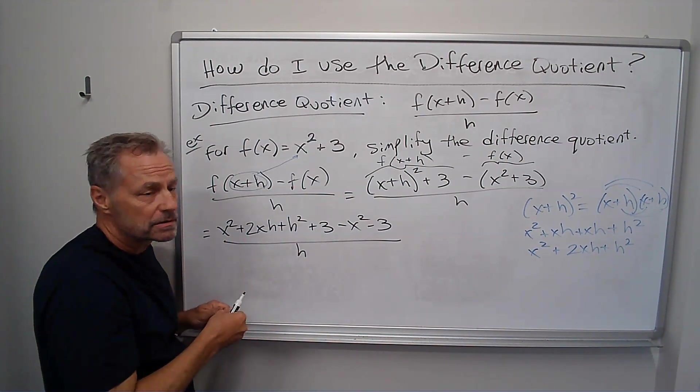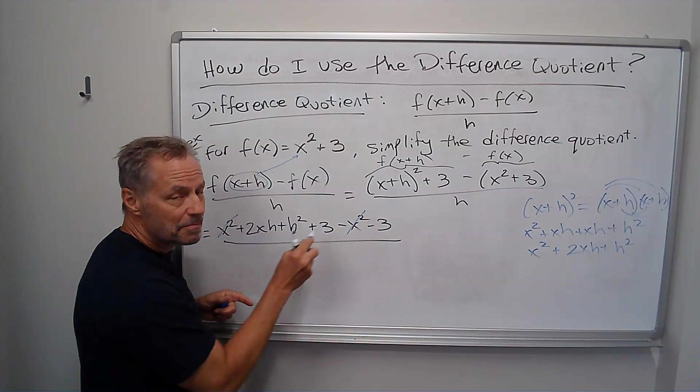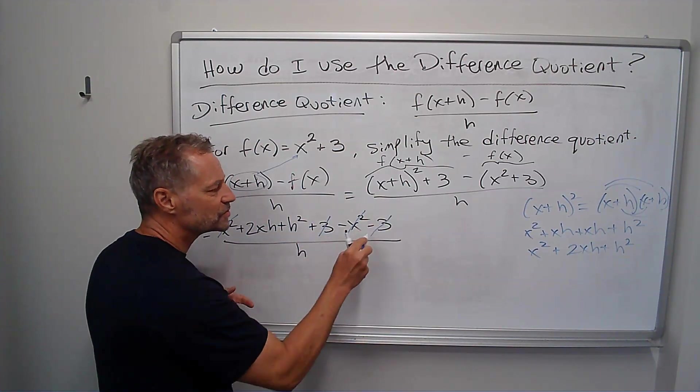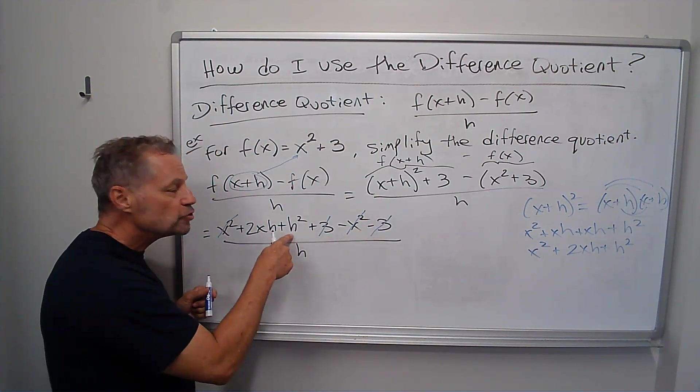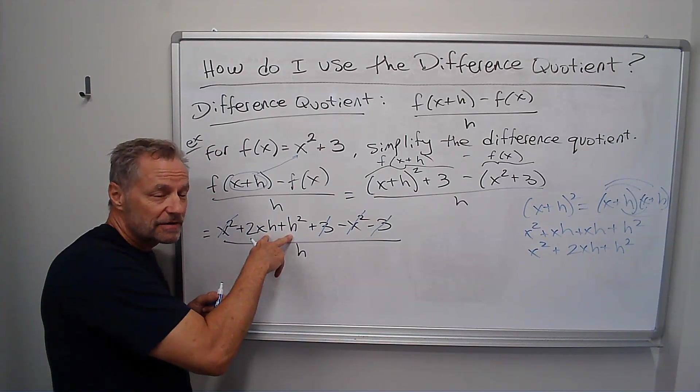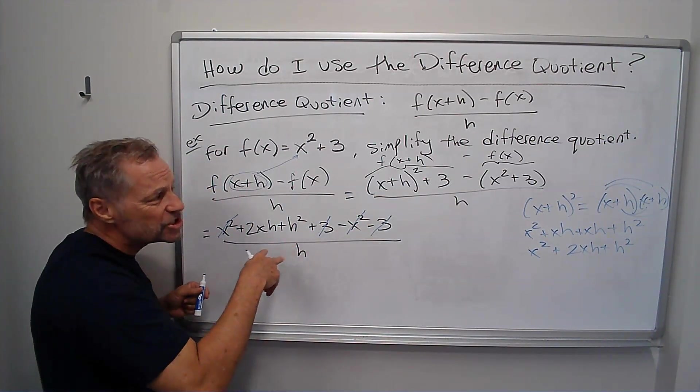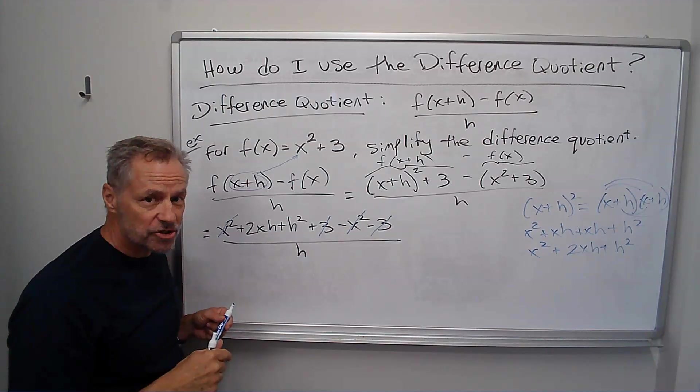If on the top, everything doesn't cancel out that doesn't have an h in it, you did something wrong. So, for instance, this x squared cancels with minus x squared, and this plus 3 cancels with minus 3. I only have two terms left. They both have an h. If you have anything left without an h, usually it's because you forgot to distribute your negative down.